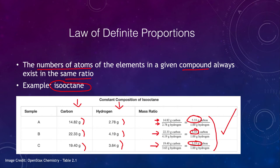these are all the same compound. If you get different ratios, then that means you may have a different compound there, you could have different compounds, which still could be composed of carbon and hydrogen.